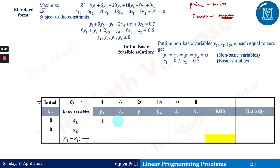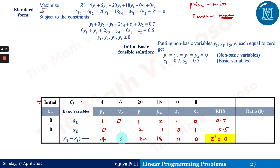The first constraint is entered into the table as: 1, 0, 1, 2, 1, 0 with RHS = 0.7. The second constraint is: 0, 1, 2, 1, 0, 1 with RHS = 0.5. The cj minus zj row is: 4, 6, 20, 18, 0, 0. The initial z-dash equals 0, since s1 and s2 have coefficients of 0.